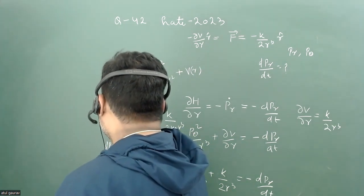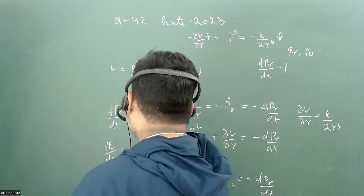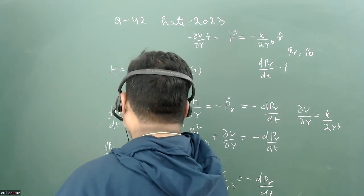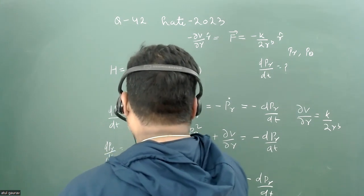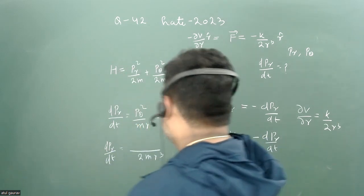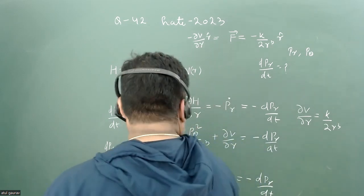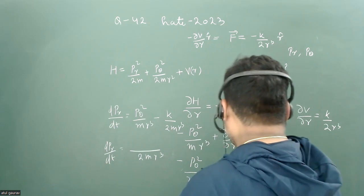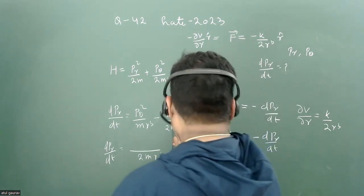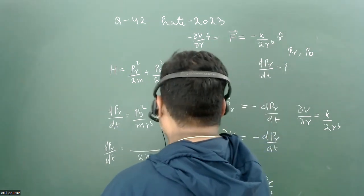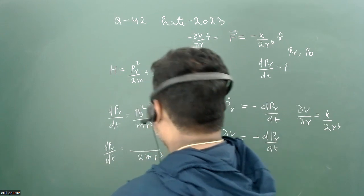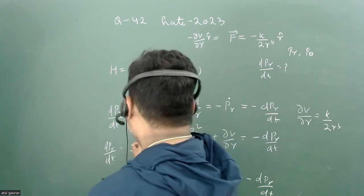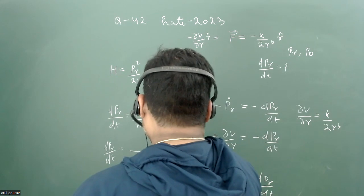We have 2mr³ and this value equals... sorry, this will be k/2r³, not mk/2mr³. There is no m there, so 2mr³ is there.